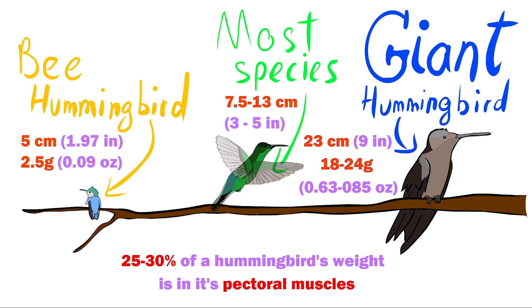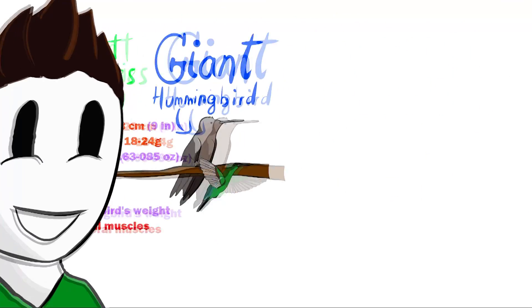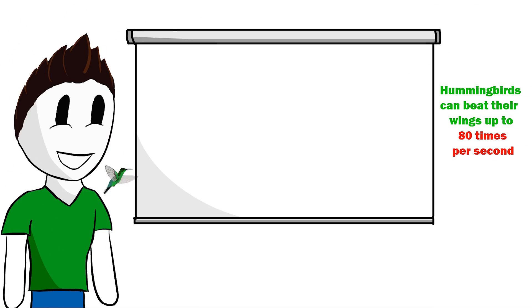They might have different sizes and weights, but all of them have something in common. The fact that 25 to 30% of a hummingbird's weight is in its pectoral muscles, and they need such big and strong muscles for the things they are the best at, flying and hovering.